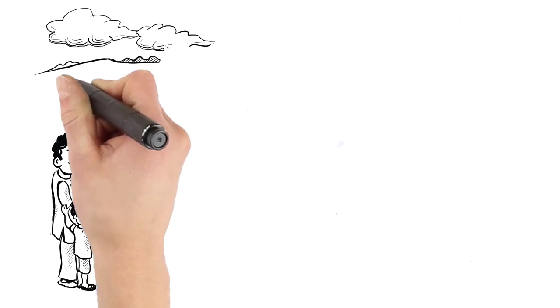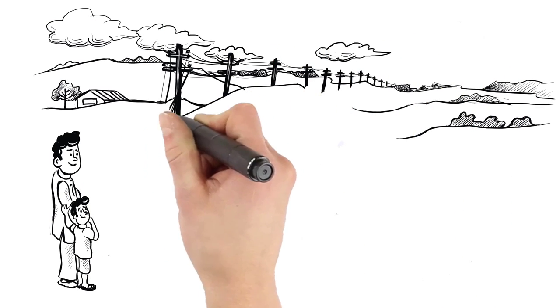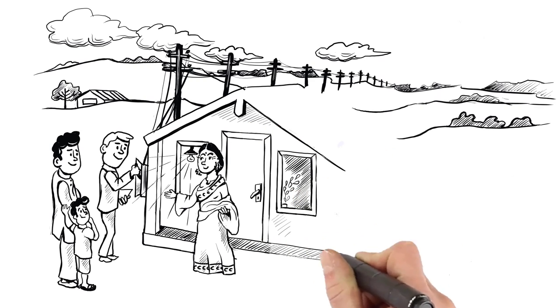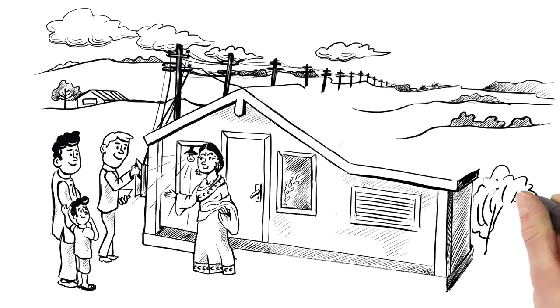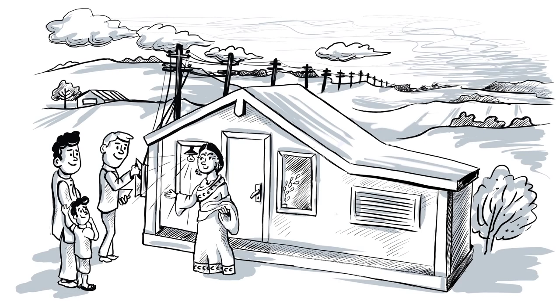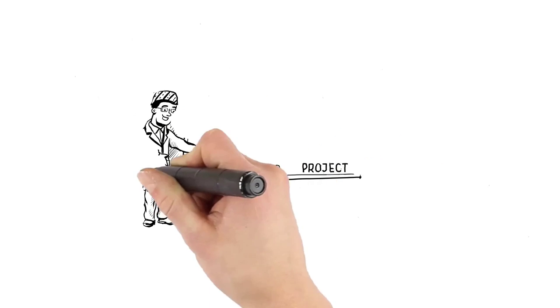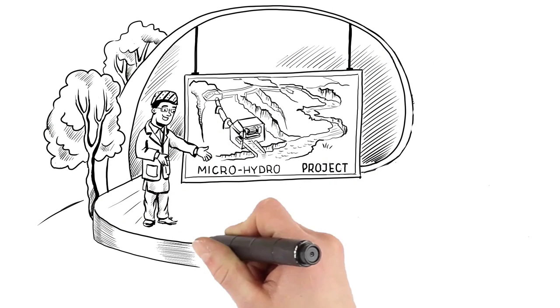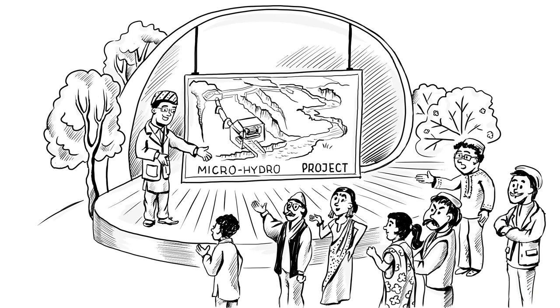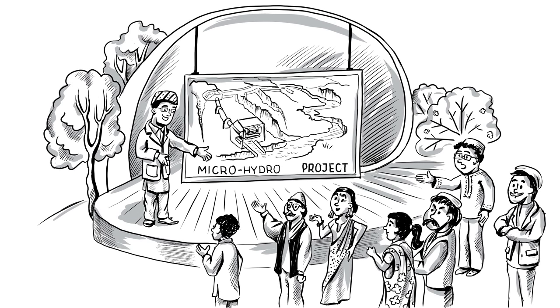There are several options for addressing infrastructure inequality. For example, subsidizing new connections to infrastructure can enable the poor to get basic services. Broader approaches might focus on giving a voice to communities regarding where and what type of infrastructure services are built.